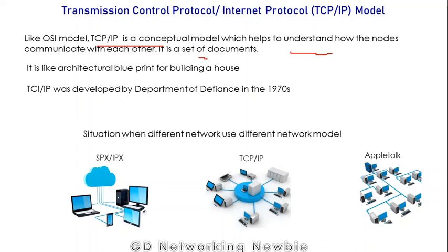It is a set of documents — just some pieces of paper with something written on them — and it is just like an architectural blueprint for building a house. If you want to build a house, first you need an architectural blueprint. This is just a piece of paper and not the actual house. Exactly in the same way, TCP/IP is a model, a guideline — this is not actually the network itself. You cannot touch it.